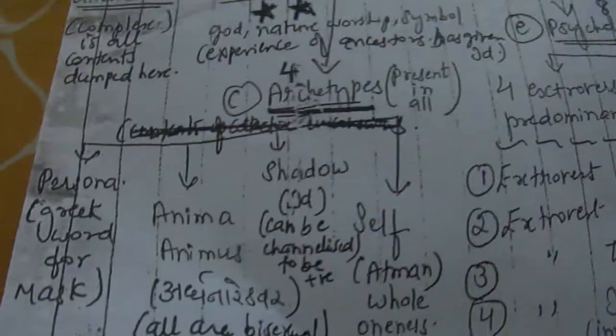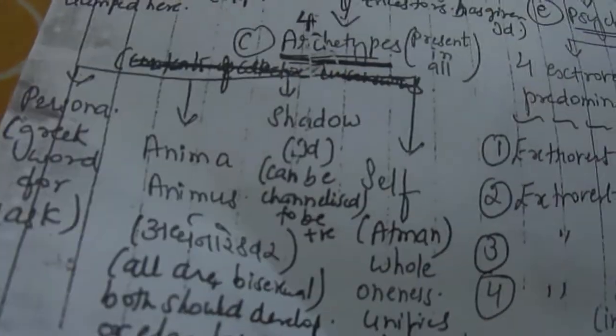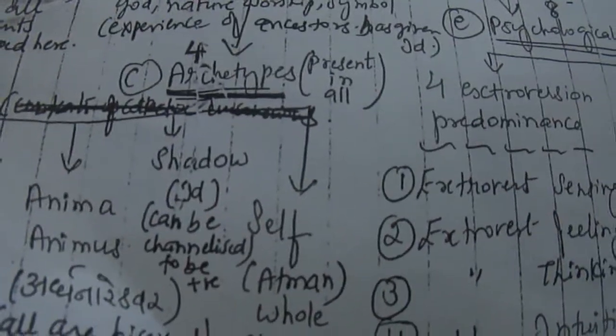Then the third was archetypes, four archetypes: persona, anima animus, shadow, and the self.